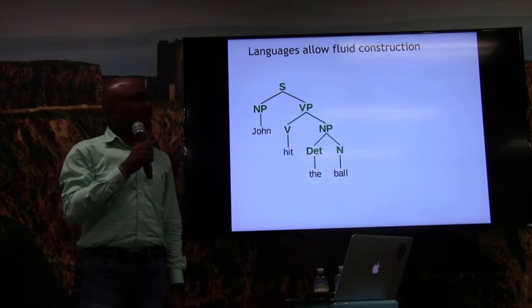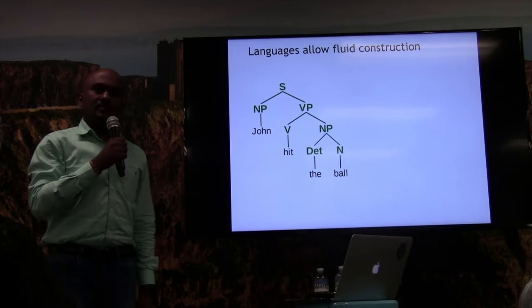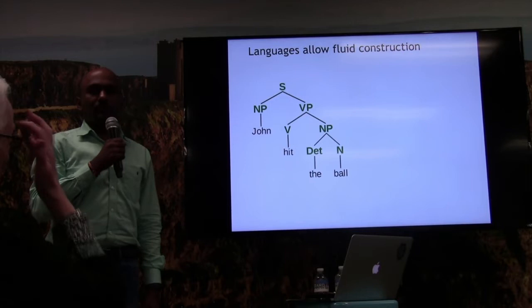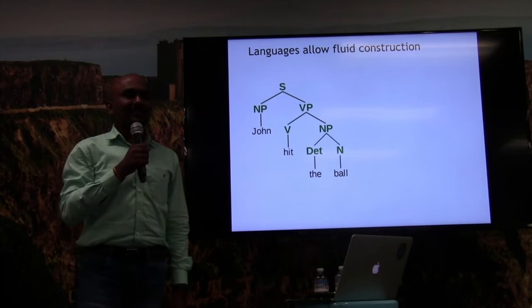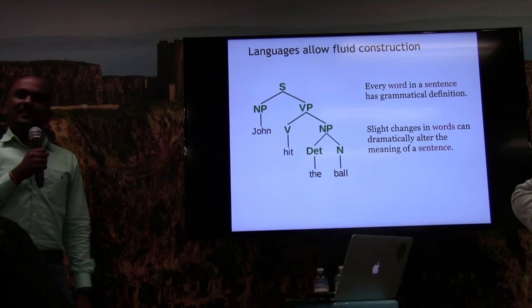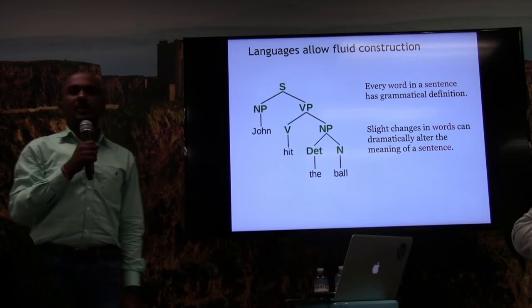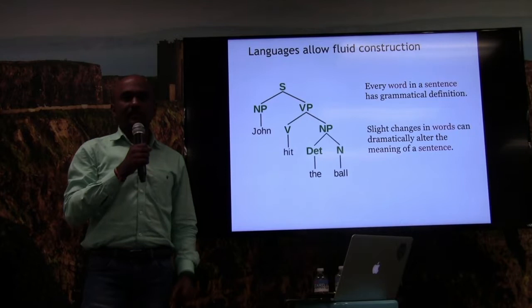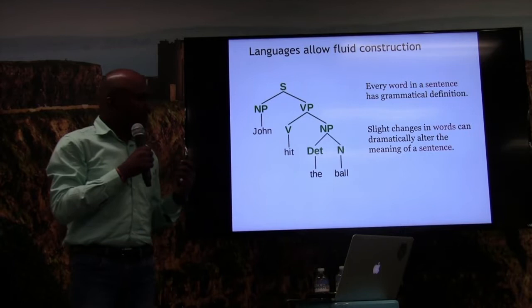If we change any of these words or even alter the sequence, it might mean something totally different. For instance, 'the ball hit John' might mean something completely opposite. So much for English grammar. The reason I'm spending time on this is there is an interesting parallel which emerges — all we have seen with words and constructing a sentence can also be extended to data. It's exactly the same. Let's look at some sample data and see how we can create different representations.